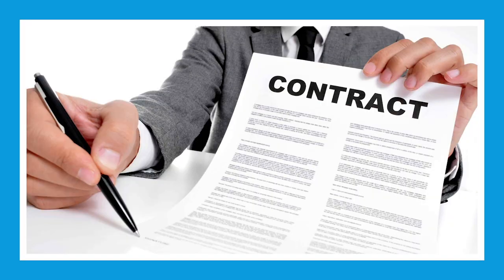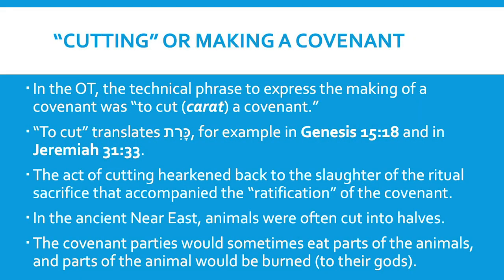A covenant may share some characteristics with an everyday contract, but it is far more. A contract can be broken easily and end up adjudicated in court, but a covenant is far more serious — better illustrated by a marriage, a restrictive real estate covenant, or a last will and testament. This is also conveyed when we learn the Hebrew word berit and the Greek word diatheke. In our final major point for lesson one, we'll discuss the cutting or making of a covenant.